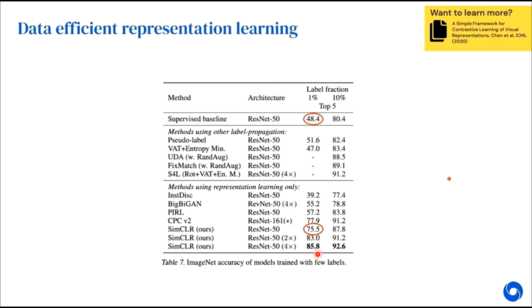And the idea again is if your learned representation is good, then it will perform well even with a small portion of the labeled data. As you can see here, with just 1% or 10% labeled dataset, they're able to achieve 85.8% and 92.6% top-five accuracy respectively.